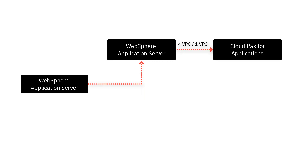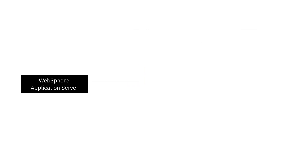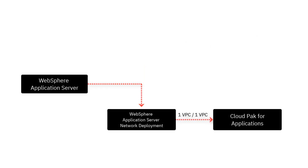If you assign the WebSphere Application Server component to the first product and the product uses 100 VPCs, it contributes 25 VPCs to license metric utilization by Cloud Pak for Applications after conversion. When the same component is assigned to the second product, it contributes 100 VPCs after conversion.